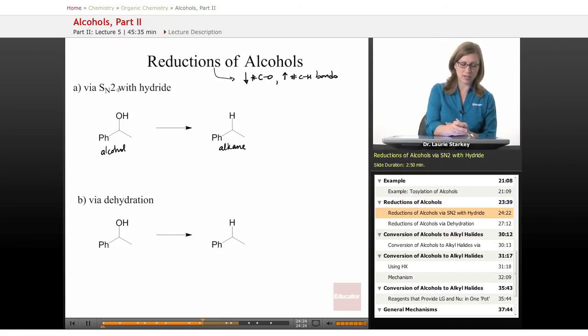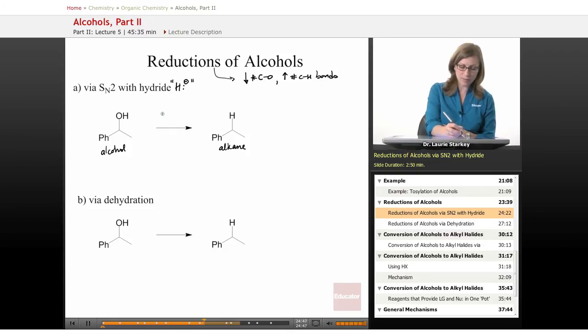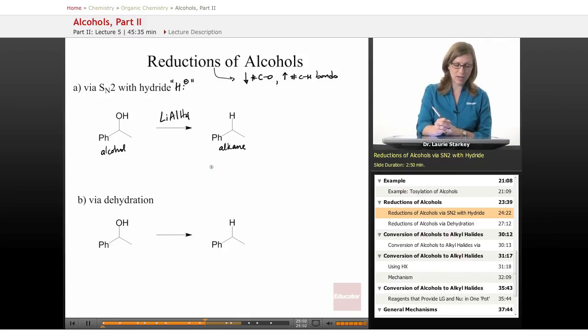One of them is via an SN2 mechanism with hydride. Hydride is H minus. And if we had a source of hydride, then it can do an SN2 mechanism. But what's the problem with just using the alcohol? The source of hydride we had that was nucleophilic was something like lithium aluminum hydride, LiAlH4.